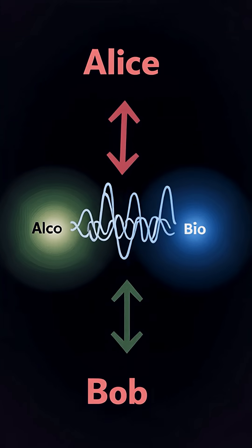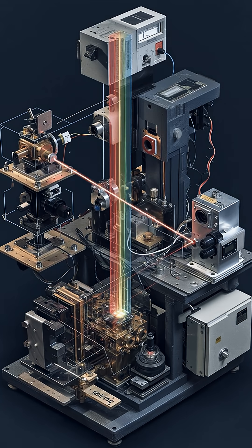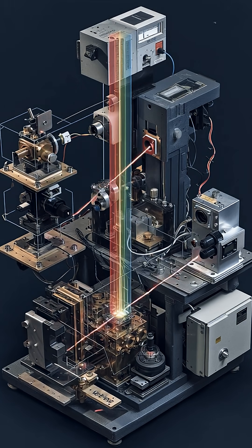This is done using entanglement. Two systems—say, particles with Alice and Bob—are correlated so that operations on one affect the state of the other.